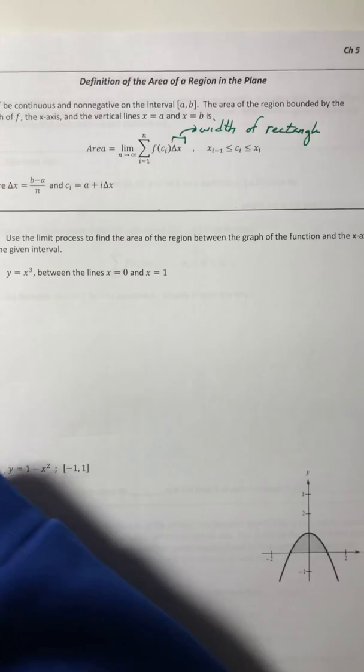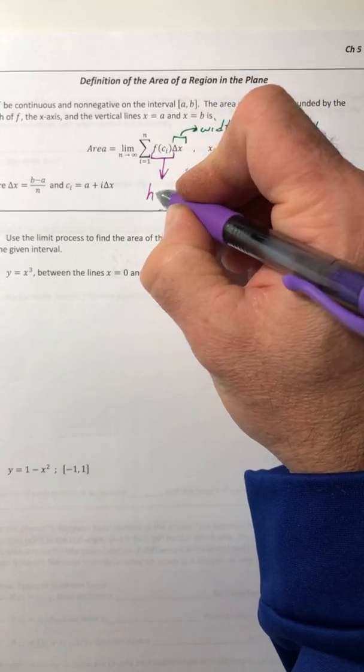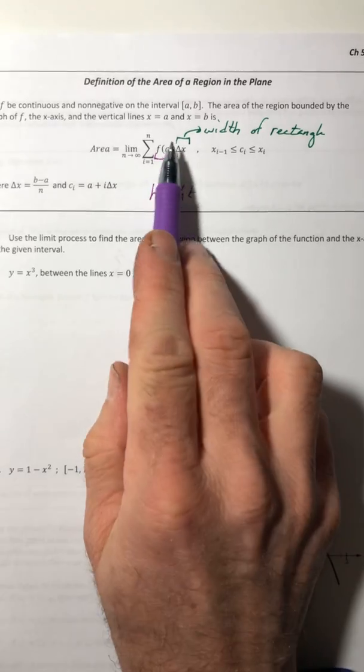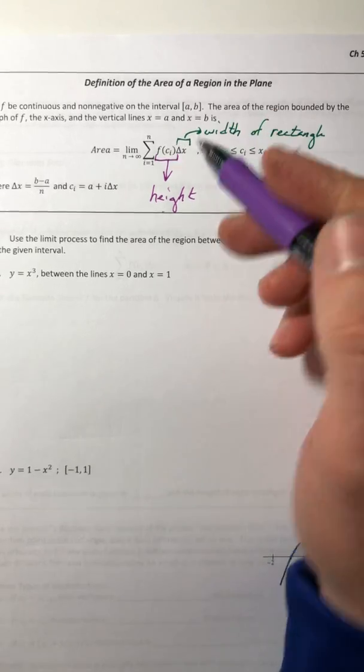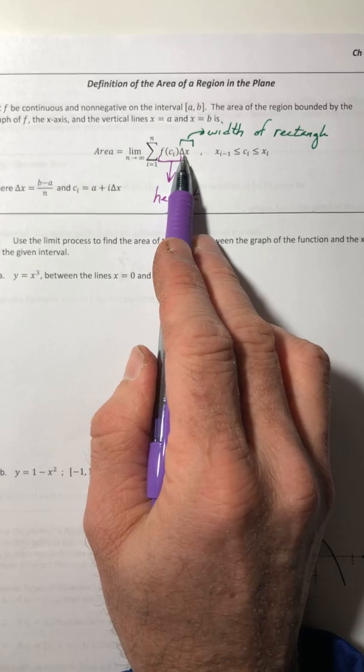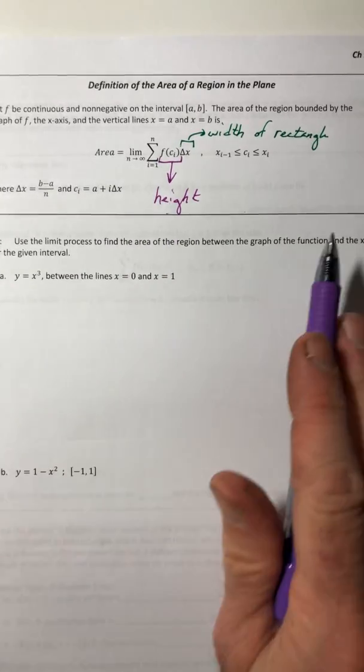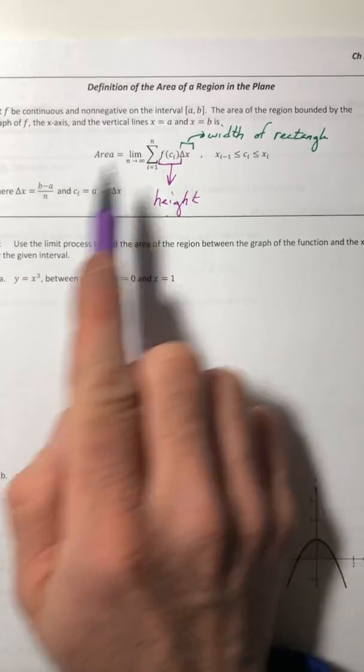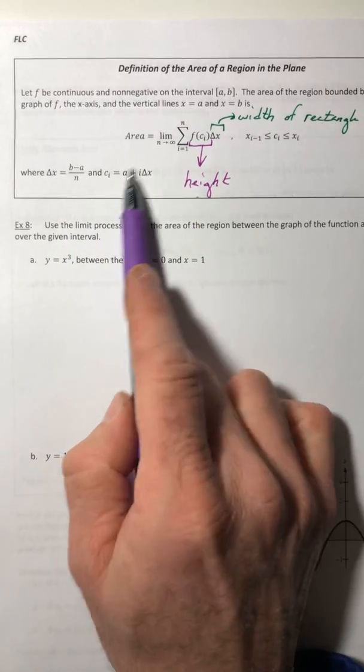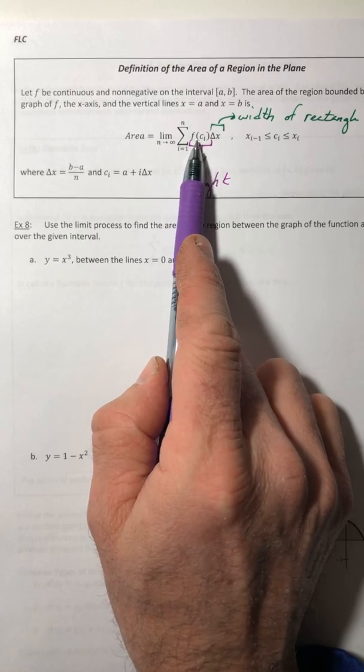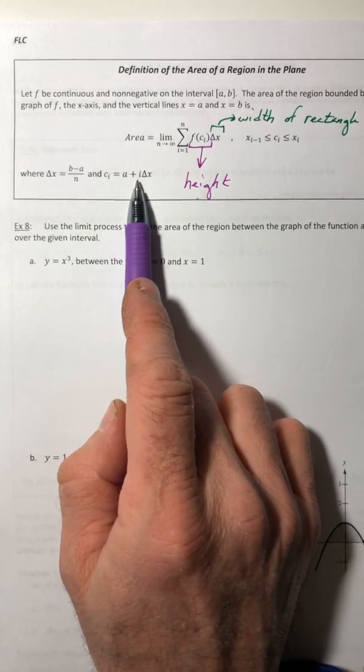This F of C sub i, that's going to generate each height for your rectangle. Because you had to plug a number into the function to actually give you the height of your rectangle. So we've got the height times the width of each of those rectangles, and you're going to add them up. Then we're going to let n go off to infinity, because now you have an infinite amount of rectangles. Your delta x is just b minus a over n. And then the C sub i, the number that you're plugging into the function itself, is going to follow this formula here, a plus i delta x.